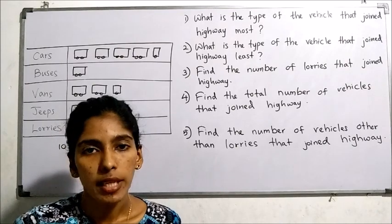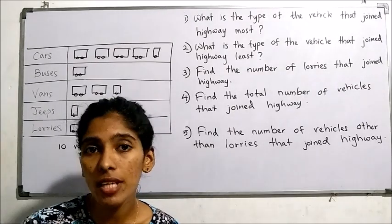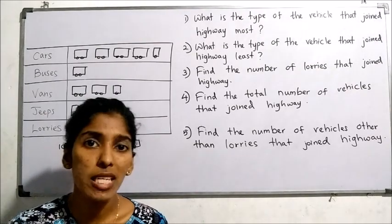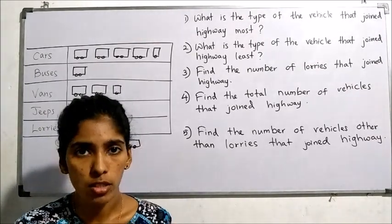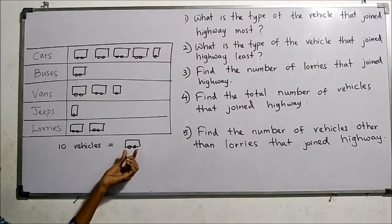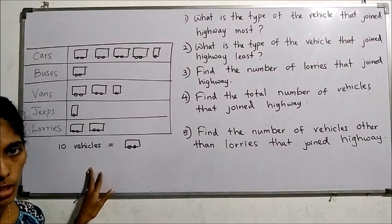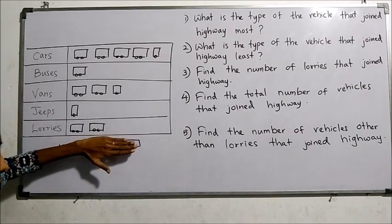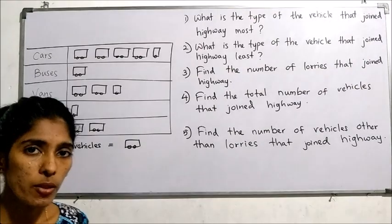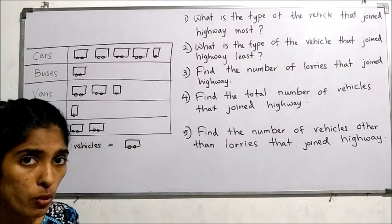Now, with the help of a picture graph, we are going to interpret data — that means when you are given a picture graph, how to collect different types of information. In this picture graph, one symbol represents 10 vehicles. This is the first example in your textbook under this subtopic. Sometimes they may not give the exact number; they may give a clue, and using that clue you find how many items one symbol represents. But here by one symbol 10 vehicles are represented, and by half a symbol 5 vehicles are represented.